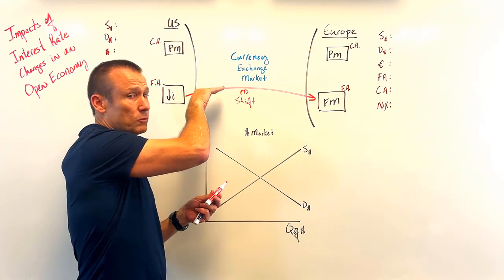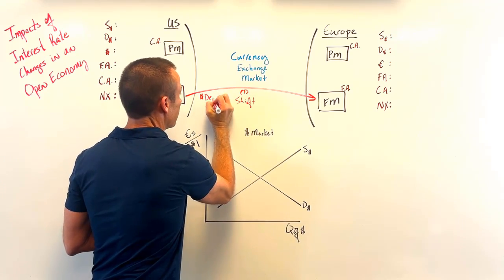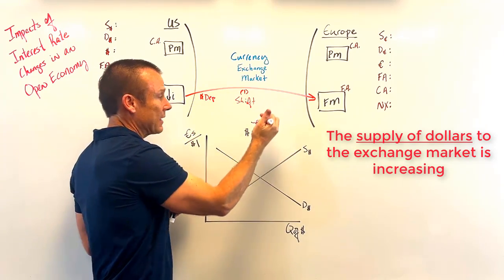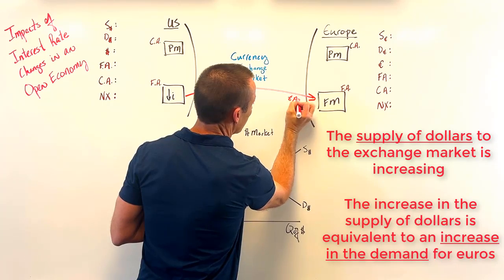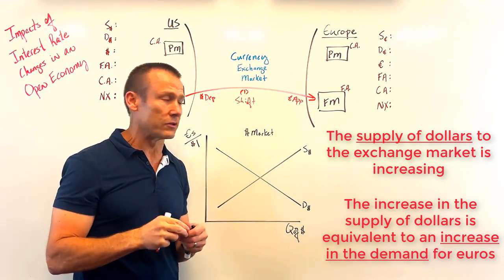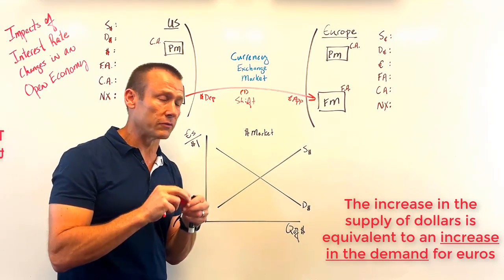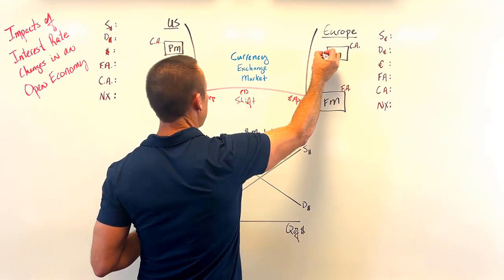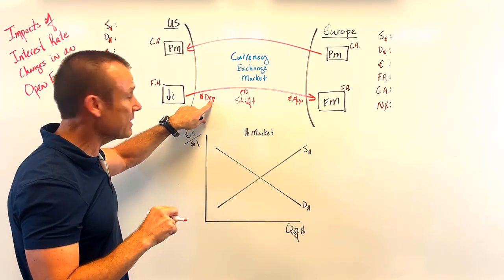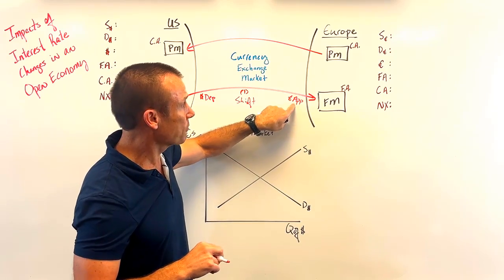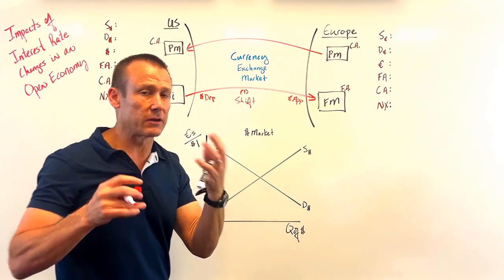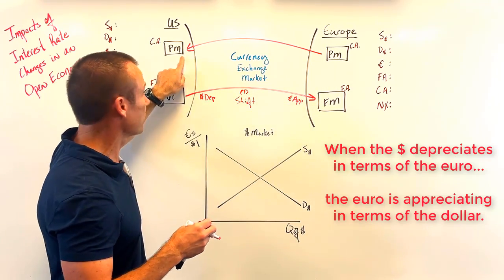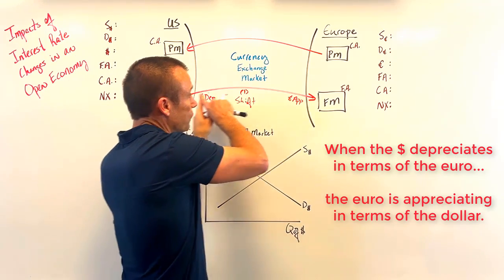When interest rates go down and money flows out, that increases the supply of dollars, so the dollar is going to depreciate. Dollars are going out of the United States and we're demanding euros, so the euro is going to appreciate. When the dollar depreciates relative to the euro, US goods become cheaper, and when the euro appreciates, European goods become more expensive.